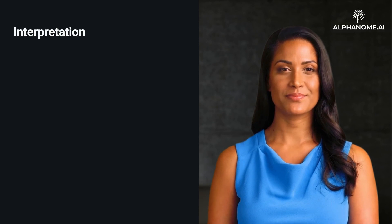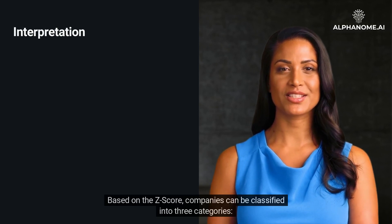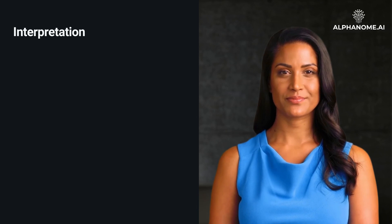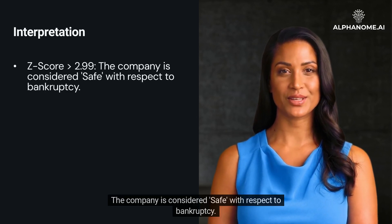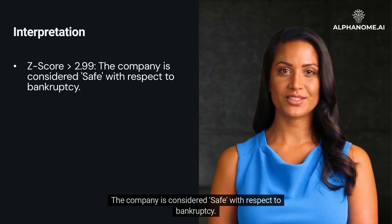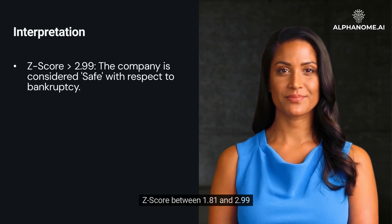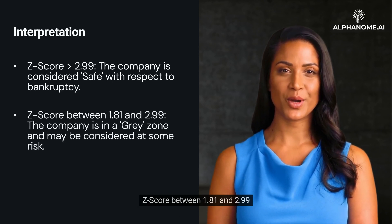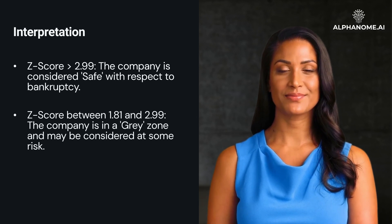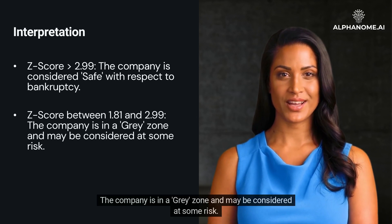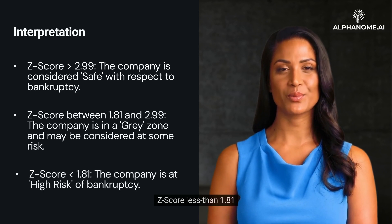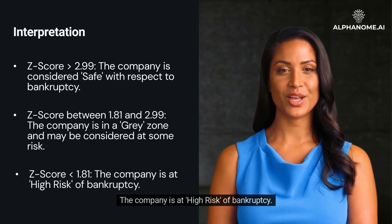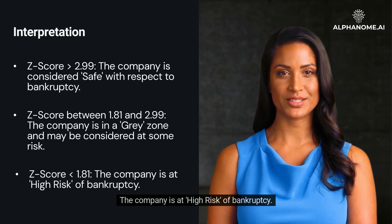Interpretation. Based on the Z-Score, companies can be classified into three categories. A Z-Score greater than 2.99 means the company is considered safe with respect to bankruptcy. A Z-Score between 1.81 and 2.99 means the company is in a gray zone and may be considered at some risk. A Z-Score less than 1.81 means the company is at high risk of bankruptcy.